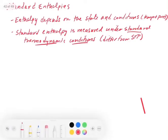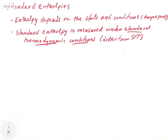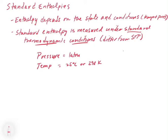Now, these are different from STP. STP from Chapter 5 had a specific set of things: it was 0 degrees Celsius and 1 atmosphere. Standard thermodynamic conditions are a little different. The pressure for standard thermodynamic conditions is equal to 1 atmosphere — that's the same as STP. However, the temperature is equal to 25 degrees Celsius or 298 Kelvin. You do have to make sure that you understand that STP for gases is one thing and standard thermodynamic conditions for thermodynamic calculations is a different thing.